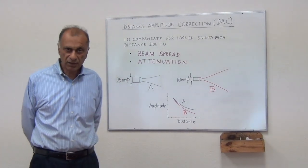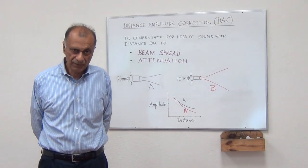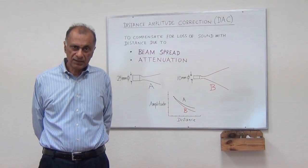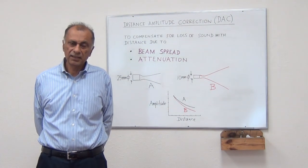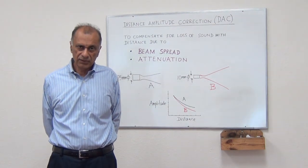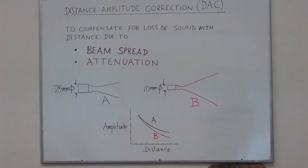This is a brief presentation on Distance Amplitude Correction Curve. What is the purpose of Distance Amplitude Correction Curve, which is also called DAC? DAC curve is used basically to compensate for loss of sound as it travels in a medium, and that loss